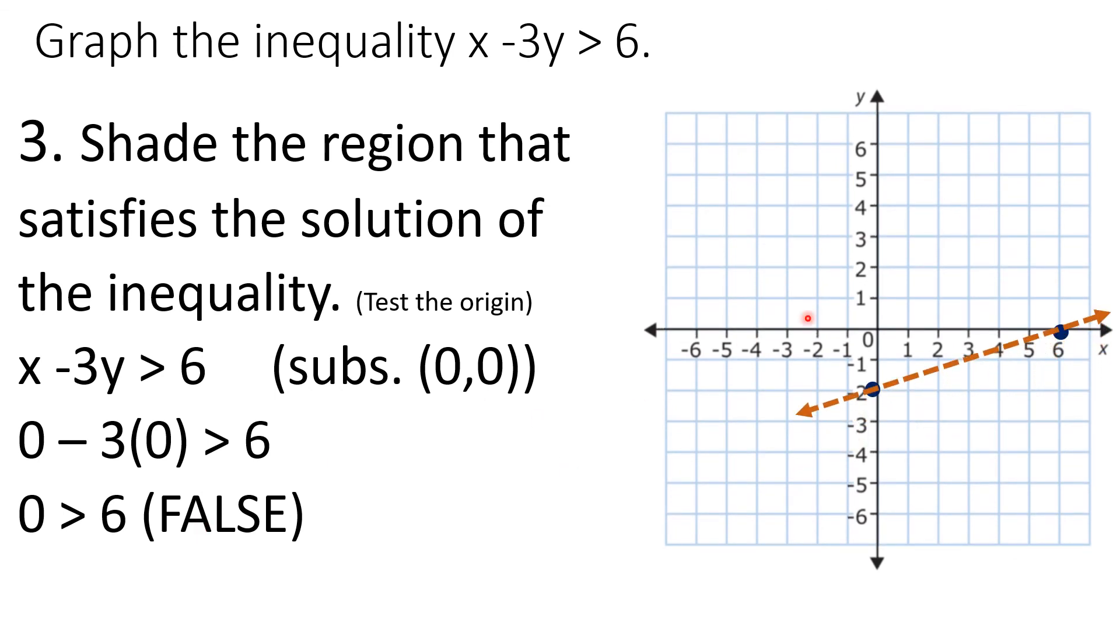Meaning, the origin side is false. So your shading will be below. The shading will be here. Do you understand? That's it.